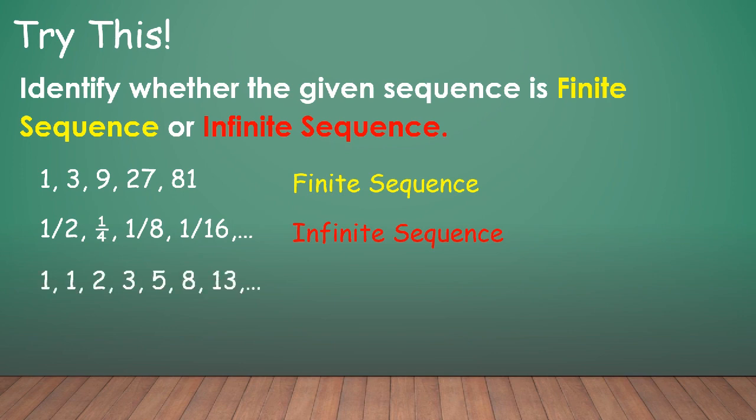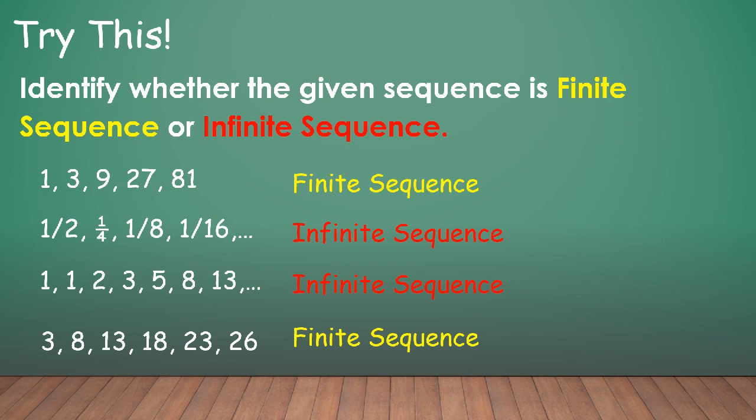Let's have the next one: 1, 1, 2, 3, 5, 8, 13, and so forth. So this is an example of infinite sequence. Again, there is an ellipses on this sequence. Let's have the next one: 3, 8, 13, 18, 23, 28. So this is an example of a finite sequence because there are only 6 terms on this sequence.